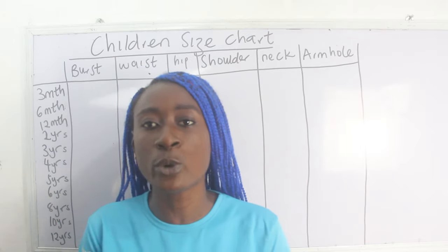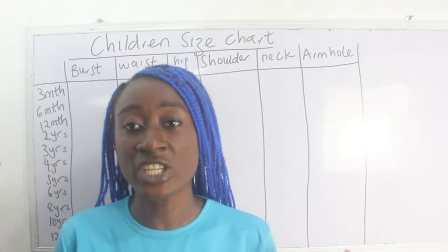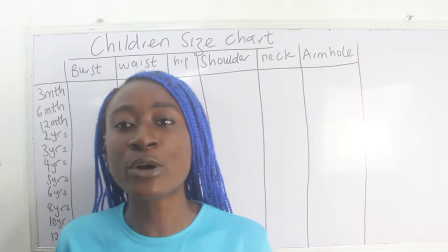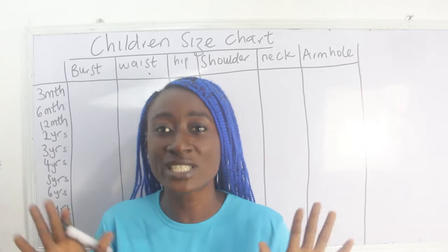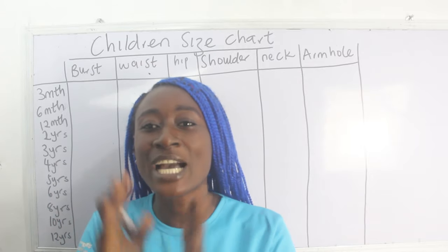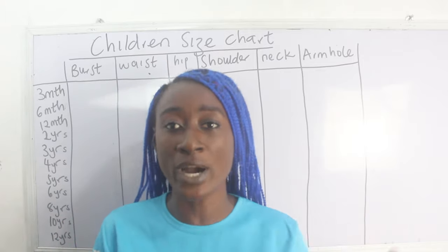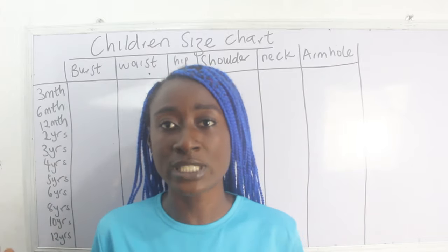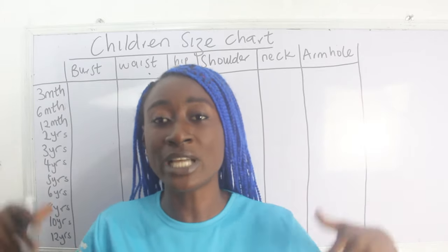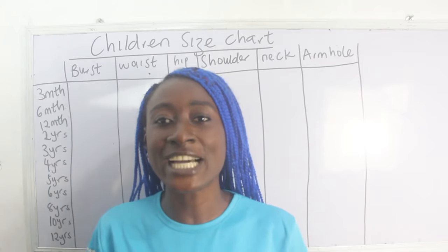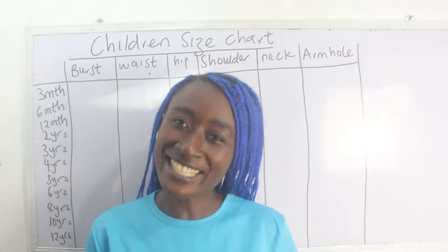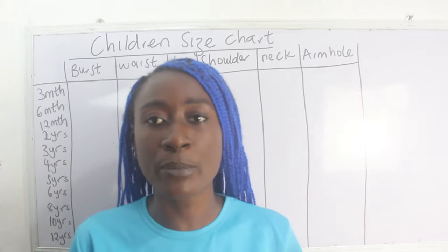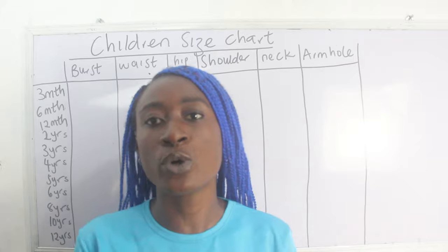If you are looking at going into ready-to-wear for children, it is necessary to have your size charts to work with and base your production on. We have a detailed size chart on the website with about 12 variables to consider. For today's tutorial I'm only covering the basic points. The link to the website will be in the description box — you can also print the detailed size chart from there.